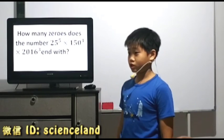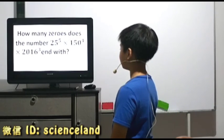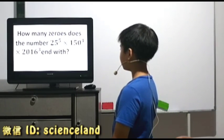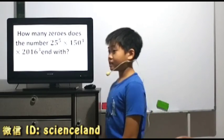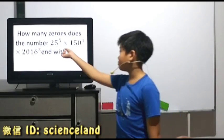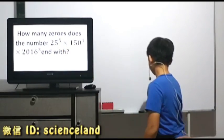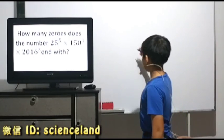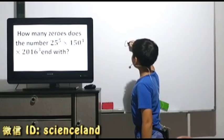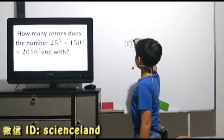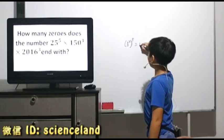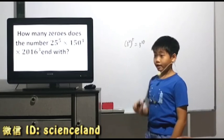Now, we'll solve this question. To find the answer first, we need to split the numbers. So, 25 will become 5 squared to the power of 5, which is 5 to the power of 10.